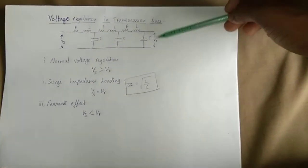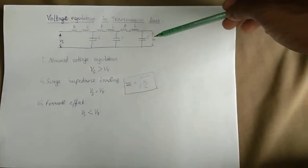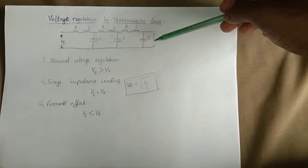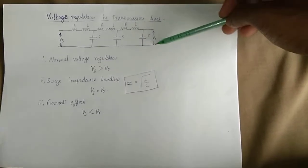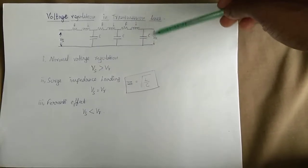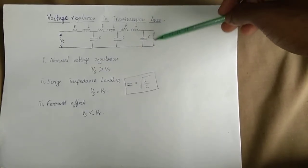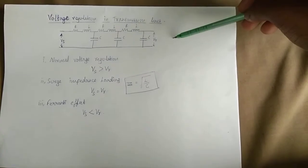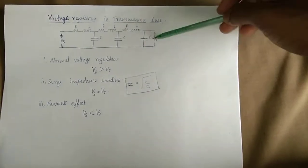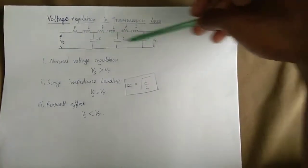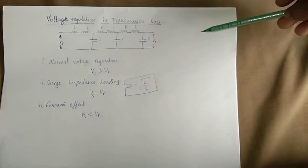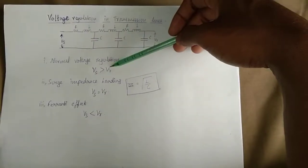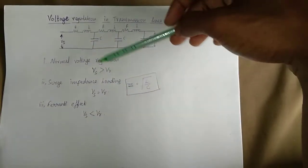Under light load, the load is connected to one-way voltage. On the transmission side, the receiving side and distribution side may not be connected because we are connected to the load.